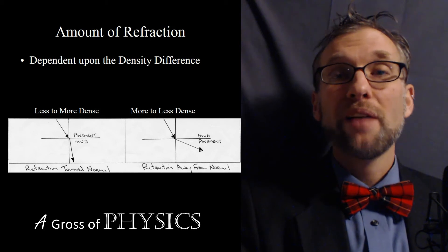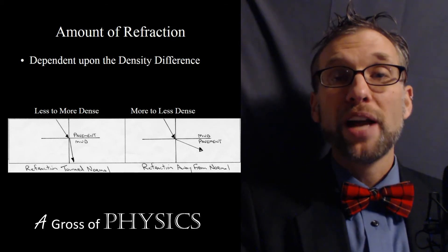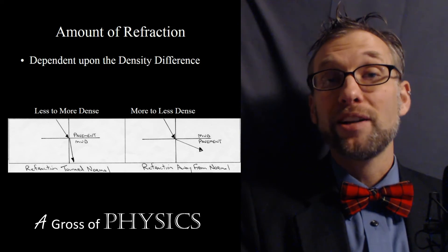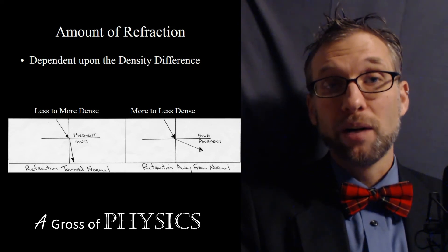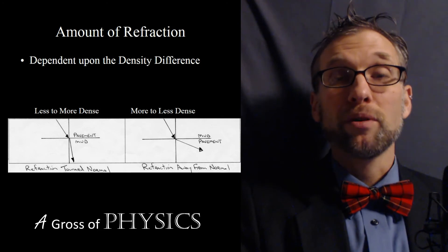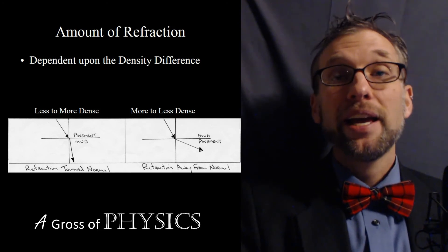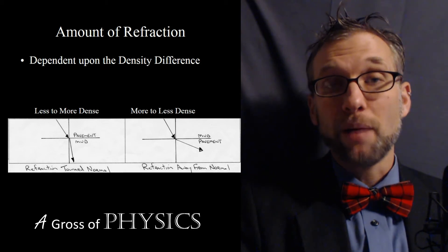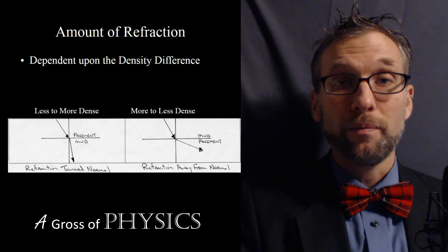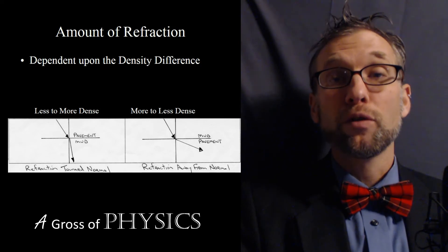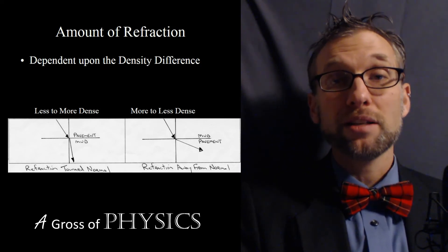We'll have an equation that describes this in a later video. For now, it's good to know whether or not your answer makes sense. Remember: less to more dense, the angle is less. On the other hand, if light speeds up in the new material — going from more to less dense — it turns away from the normal and the angle is more. So more to less is more.